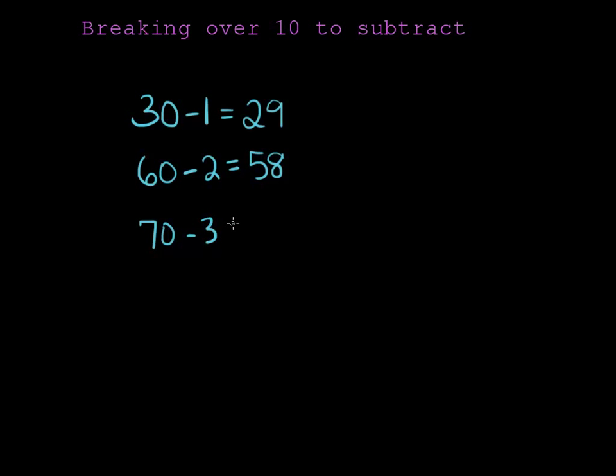Let's try 70 minus 3. Well it's got to be 60 something. In fact it has to be 67 because 7 is the complement of 3.